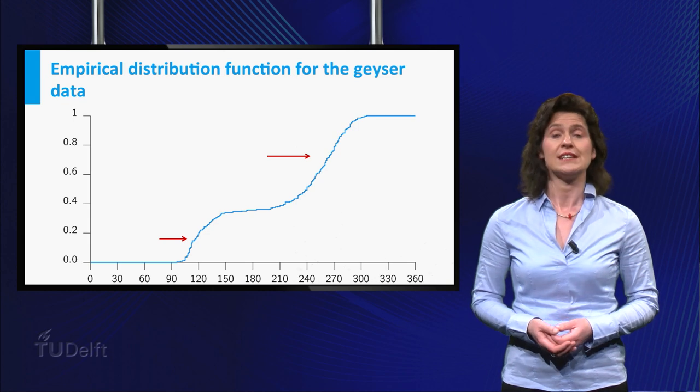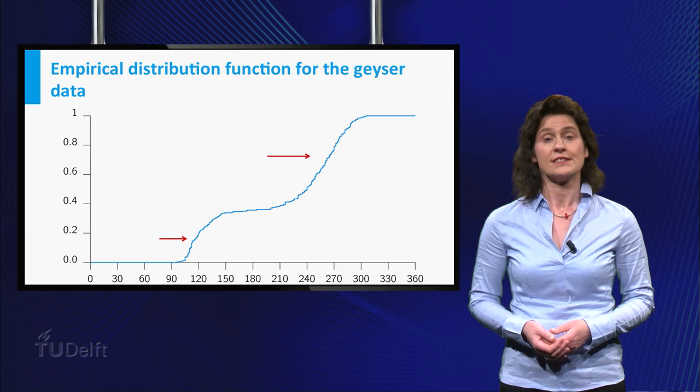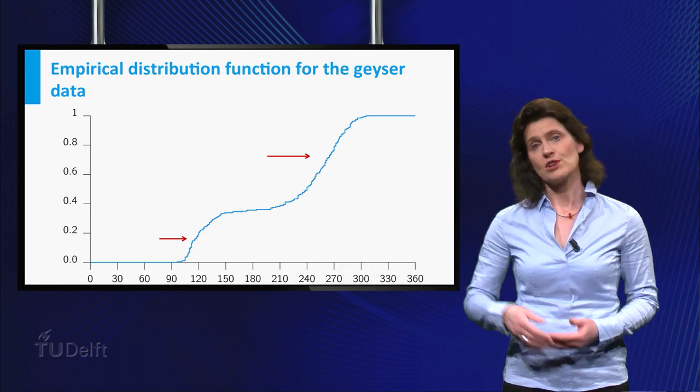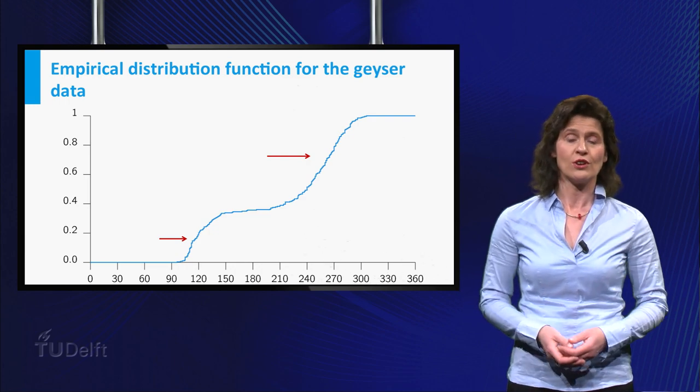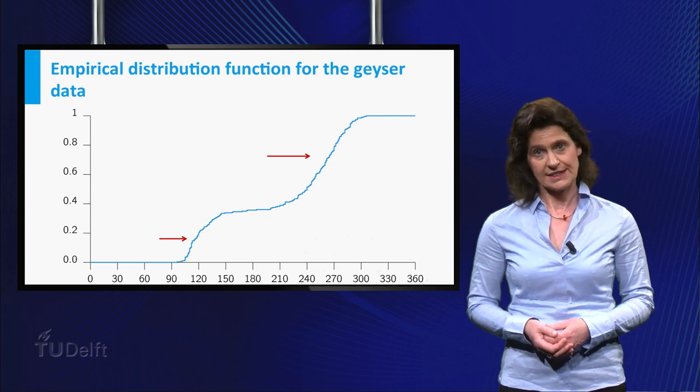Also, you see it starts at 0, left from 96 seconds, which is logical since there are no measurements smaller than 96. And it climbs up to 1 at the point 306, where it stays. Also logical, because all data points are smaller or equal to 306 seconds.